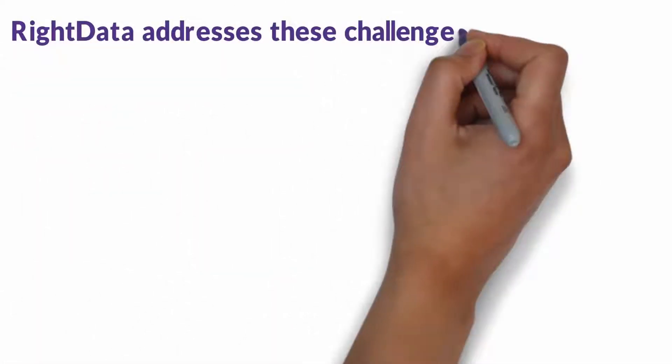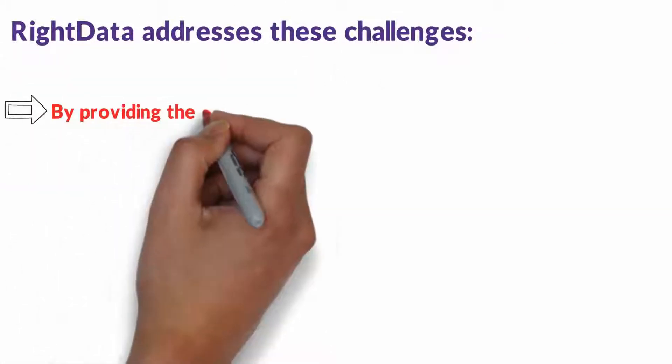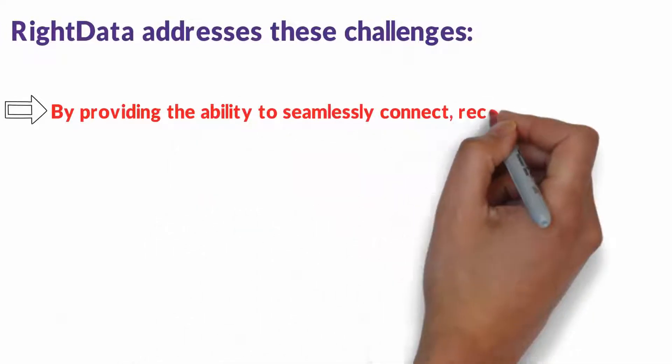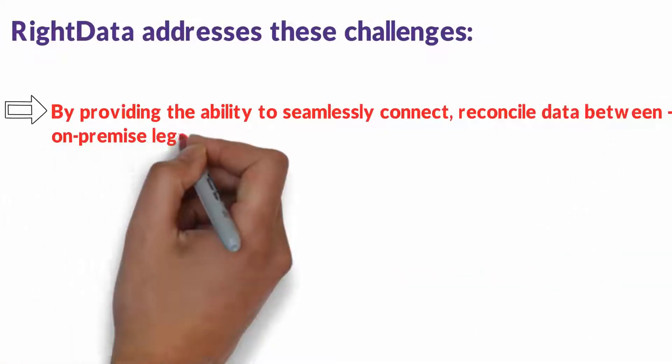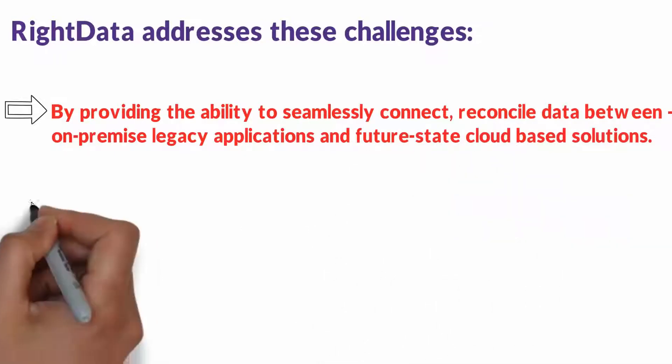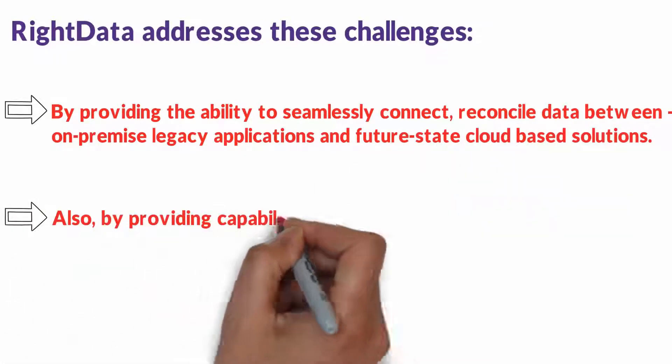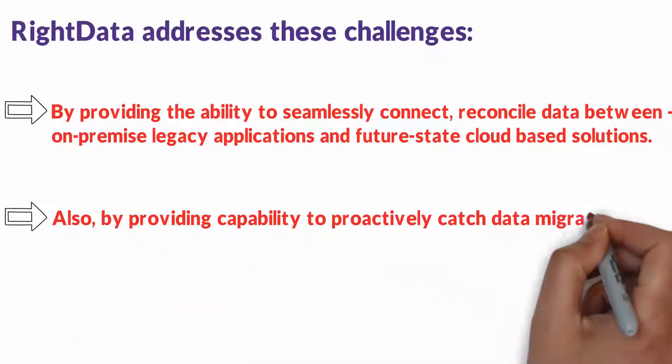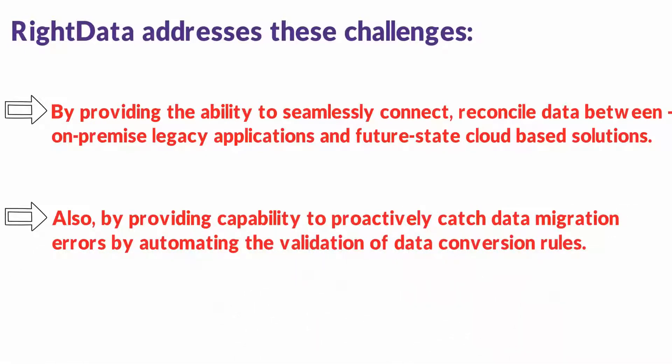RightData addresses these challenges by providing the ability to seamlessly connect, reconcile data between on-premise legacy applications and future state cloud-based solutions. Also, by providing capability to proactively catch data migration errors by automating the validation of data conversion rules.